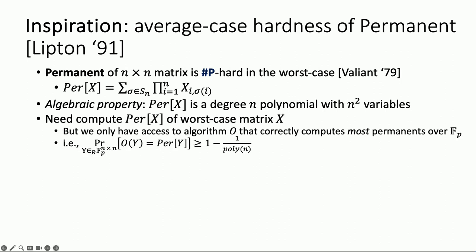Here's the setting. The goal is to compute the permanent of an arbitrary worst-case matrix over the finite field — call that X. I don't know how to do that a priori, but luckily I do have at my disposal, by assumption, this faulty algorithm O, or average-case algorithm O, that correctly computes most permanents over my finite field.